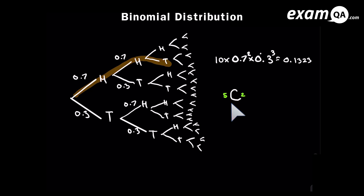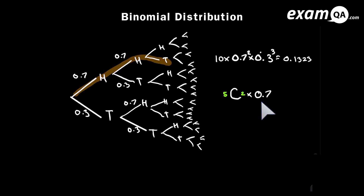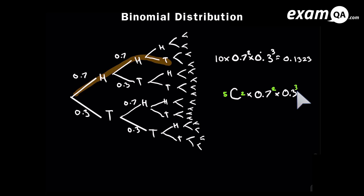N is how many times we're tossing it, which is five, and R is how many successes we want. We had the probability of success, 0.7, to the power of two — the two representing how many successes you have. Then we multiplied by failures: we wanted three failures, so that was to the power of three. This is the general layout, and you can try this on your calculator — it should give the same result.